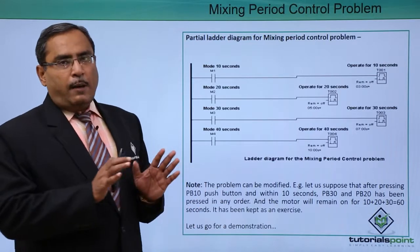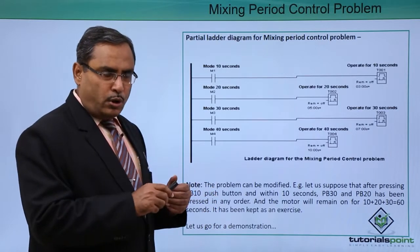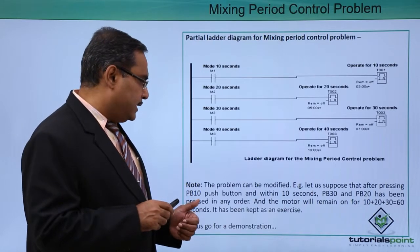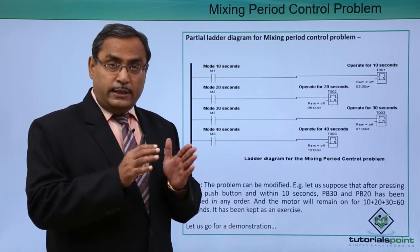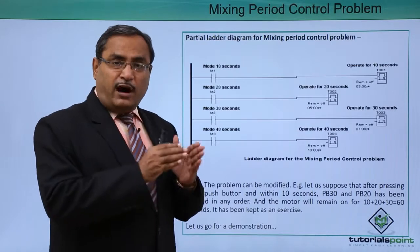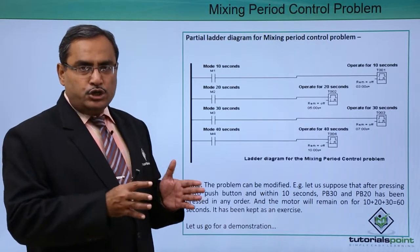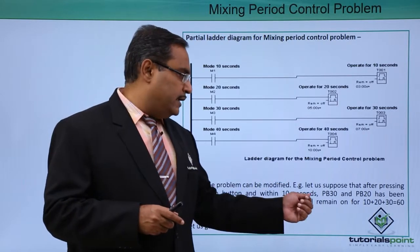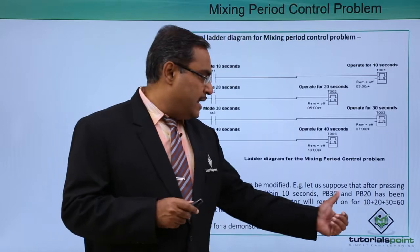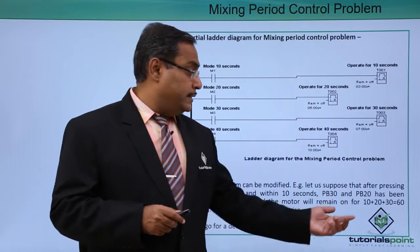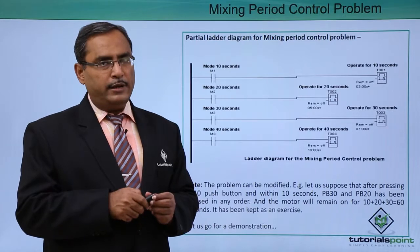Now I require one update to this problem — a version 2.0. Suppose I first press P10 and while the mixer is in operation I also press P30 and P20. Instead of ignoring those presses, the durations will get cumulative. So if I start with PB10 and while operating press PB30 and PB20, the mixer will remain on for 60 seconds in total. This is the update I am requesting you to implement at your end.